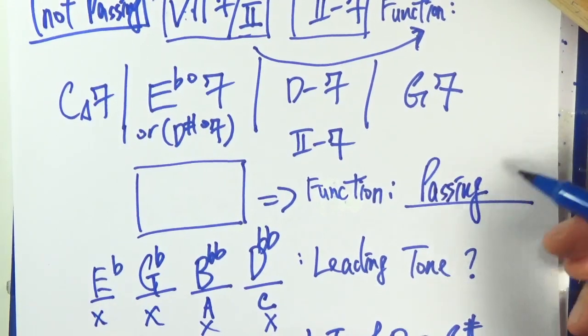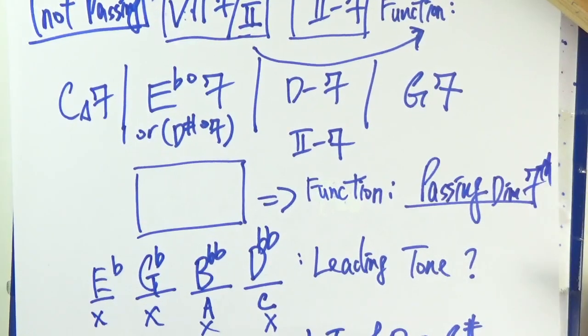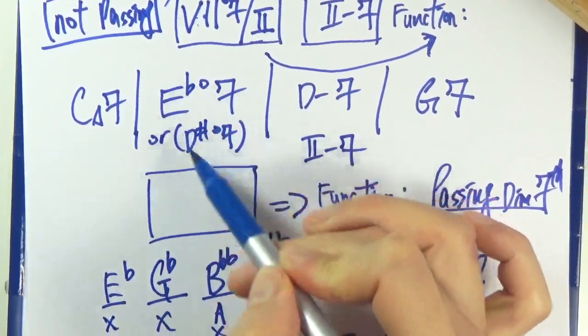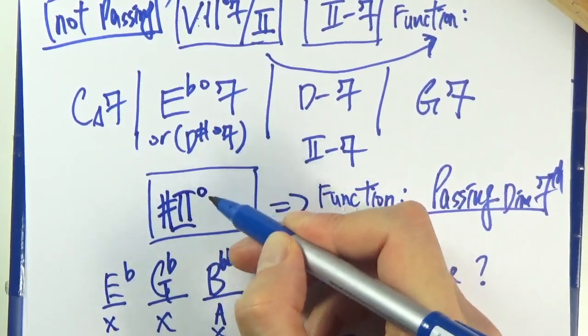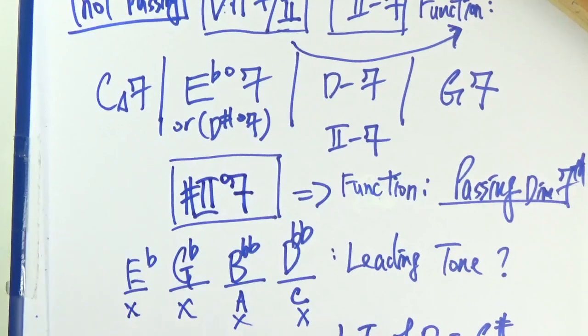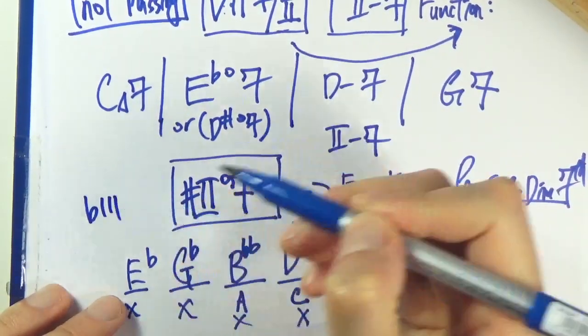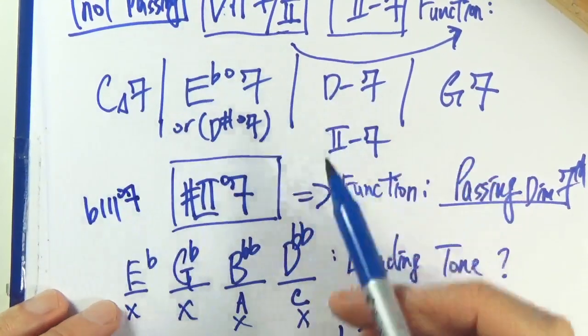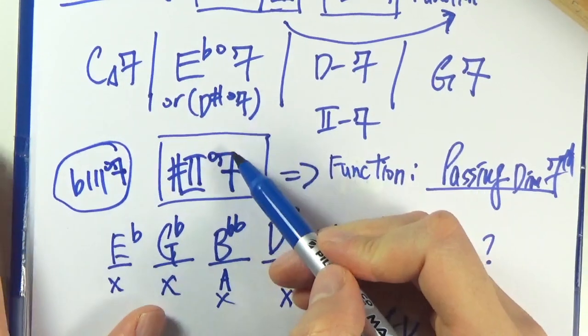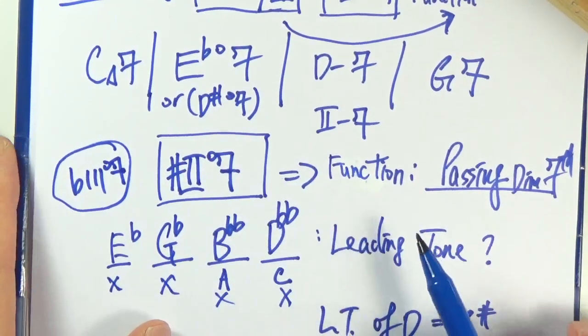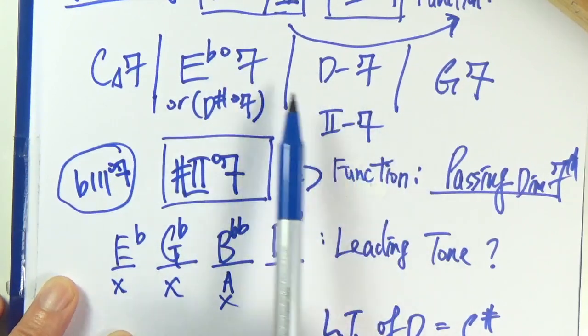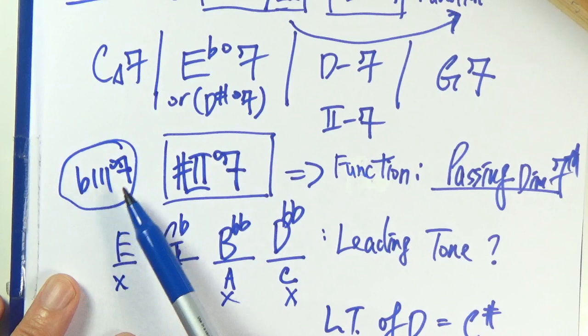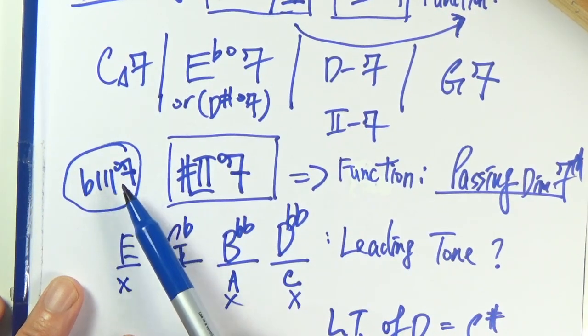It's a passing diminished 7 chord. And this guy here can be analyzed as a sharp 2 diminished 7 chord. Technically, of course, you can analyze it as a flat 3 diminished 7 chord, but like the textbook way, usually they would analyze it as a sharp 2 diminished 7 chord to indicate that it is actually a passing chord. Personally, I think the flat 3 diminished 7 is more appropriate since you have a downward movement here. E flat going to D. So if you have a downward movement, I think the flat version, flat 3 diminished 7 version analysis would be better.